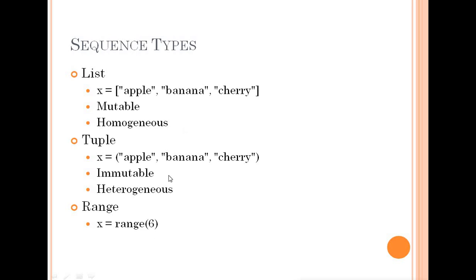Let's look at an example. A list uses square brackets — for example, ['apple', 'banana', 'cherry']. A tuple uses parentheses. The key difference between them is that a list is mutable and a tuple is immutable. Mutable means the values can be changed.